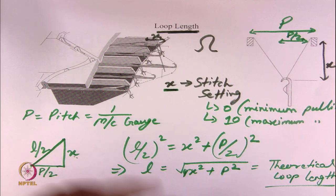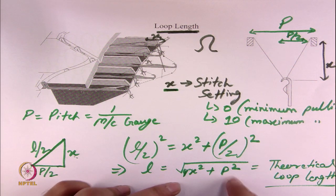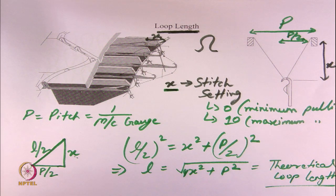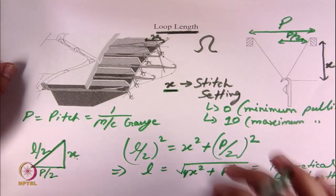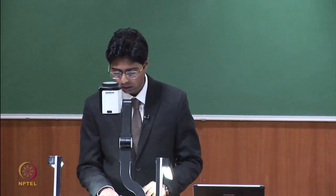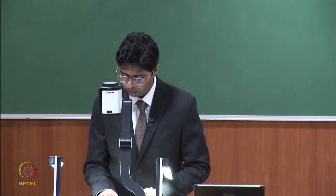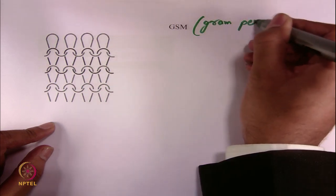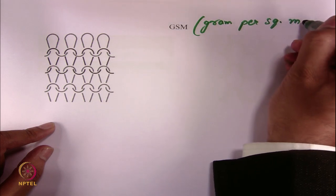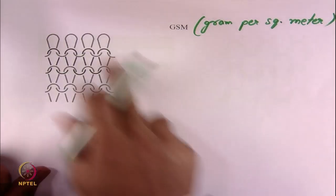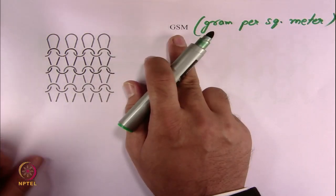Once you know the theoretical loop length from machine parameters x and P, you can compare it with the experimental value of loop length introduced in previous lectures to find out the actual loop length. This relationship is very useful. Now let us come to the second fabric property, which is GSM — gram per square meter.